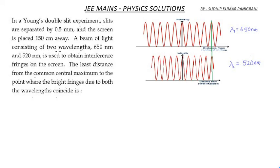A beam of light consisting of two wavelengths, 650 nanometers and 520 nanometers, is used to obtain interference fringes on the screen. The least distance from the common central maxima to the point where the bright fringes due to both wavelengths coincide is?